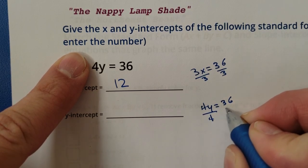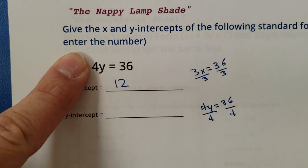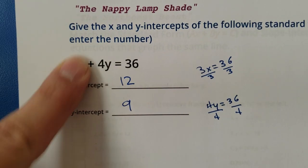I'm going to have 4y equals 36. Divide both sides by 4. Y is going to equal 9. There we go.